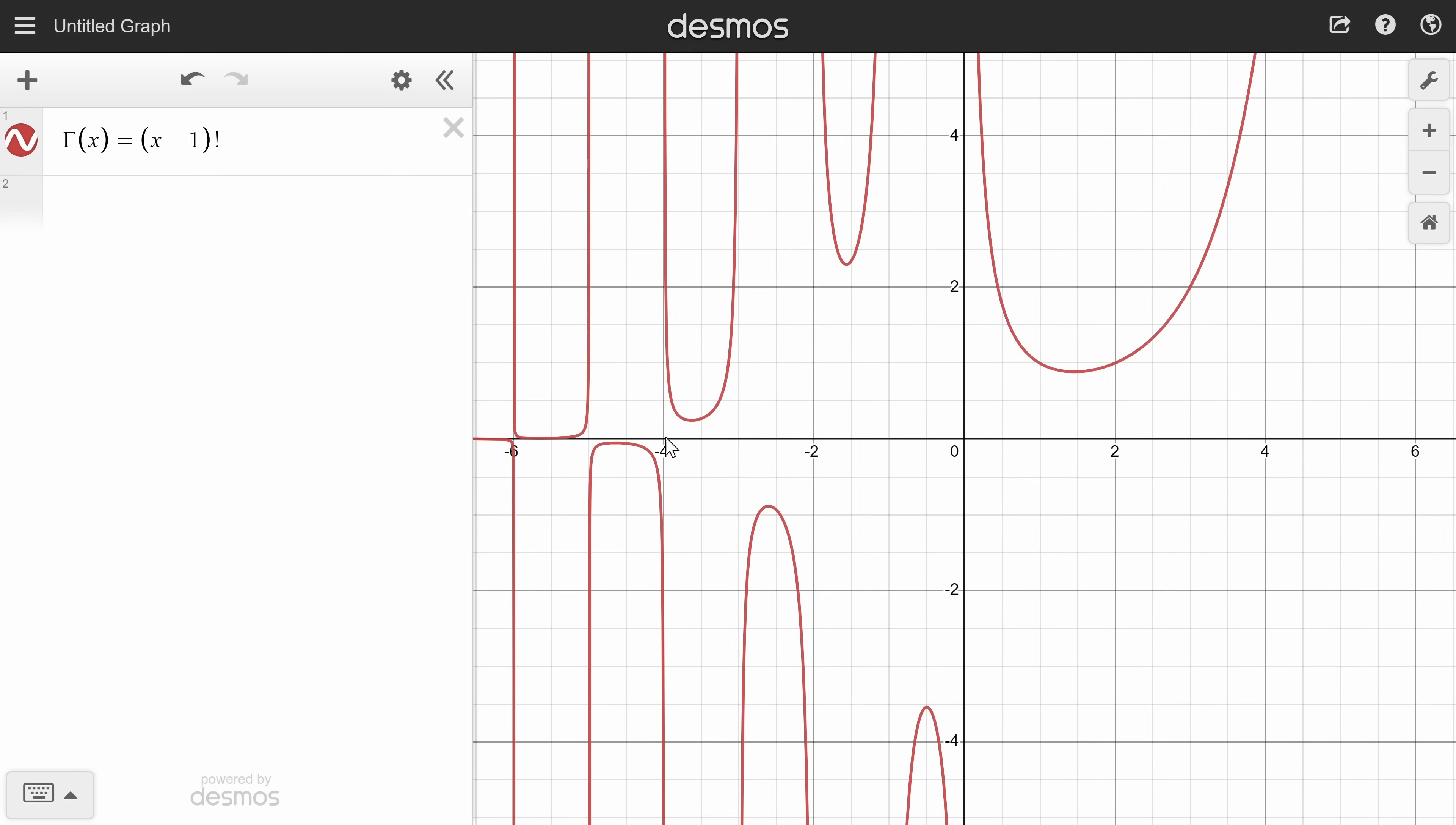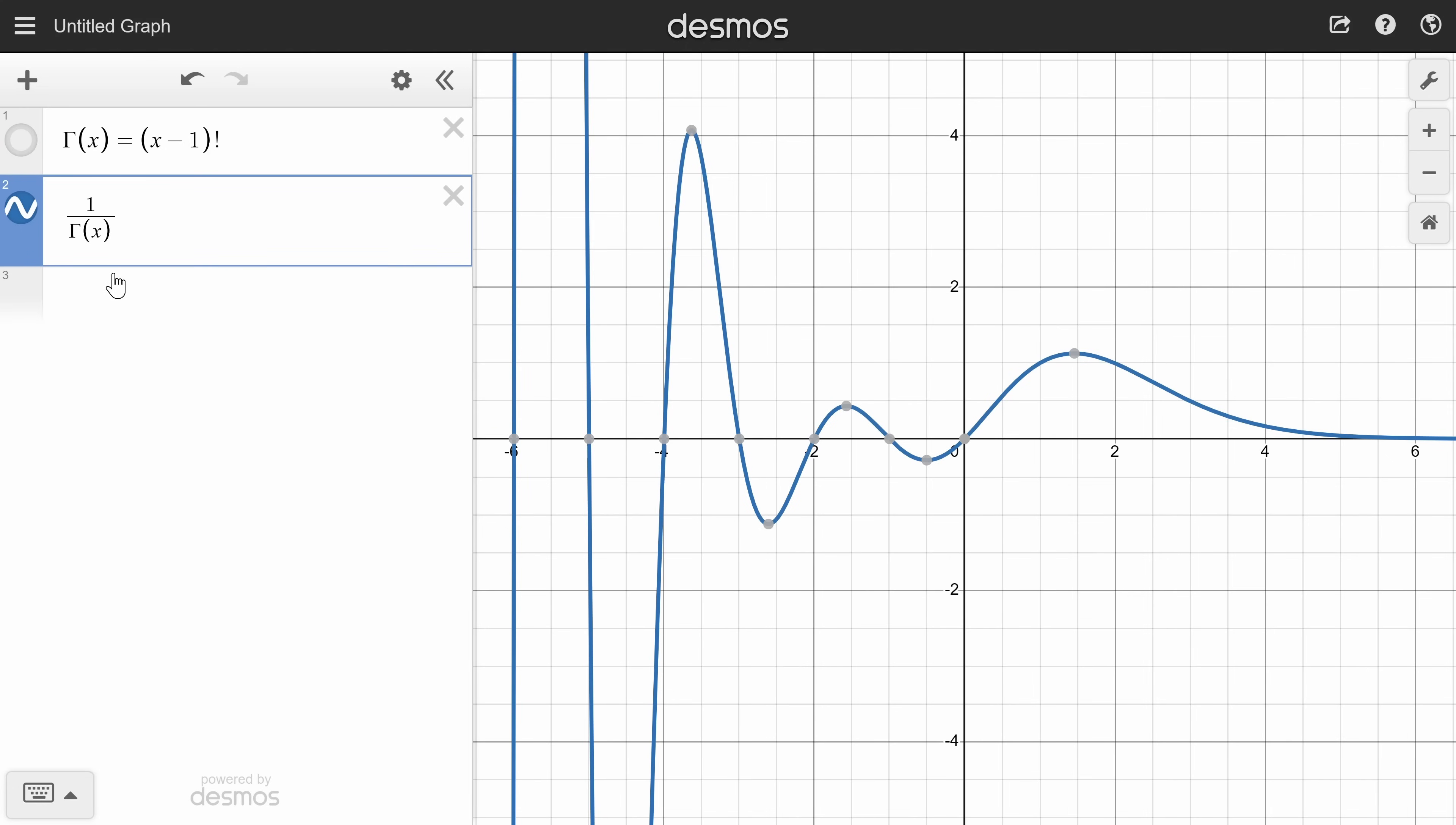So if I take its reciprocal, all these asymptotes effectively become zeros. I'll also plot 1 divided by gamma of 1 minus x, which is the same thing but flipped horizontally, so it has a zero at every positive integer.